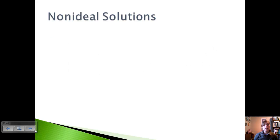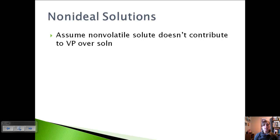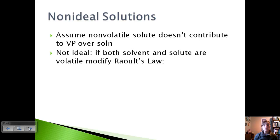Okay, well right now we have been assuming that the solute is non-volatile and it doesn't contribute to the vapor pressure over the solution, which is why we've been able to use Raoult's law. But that's not what always goes on. And so sometimes we'll have non-ideal solvents and solutes. And this is if both the solvent and the solute are volatile, and then we need to modify Raoult's law to look like this.